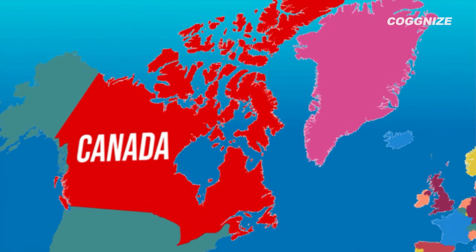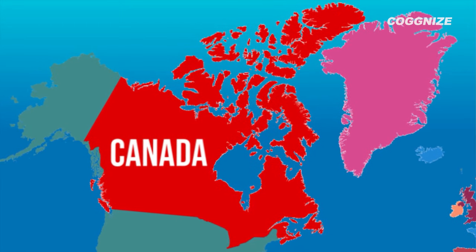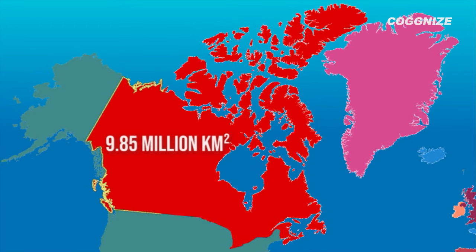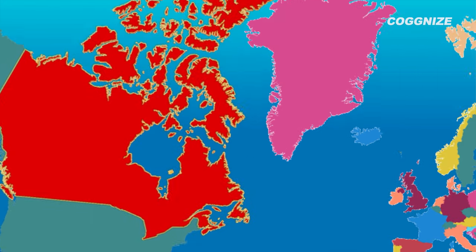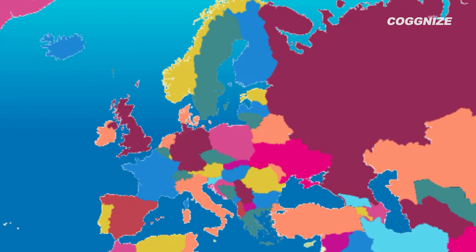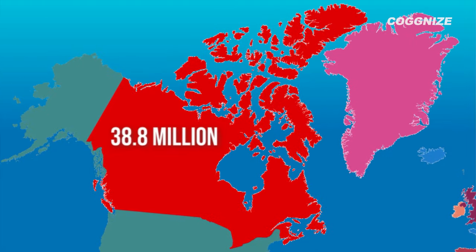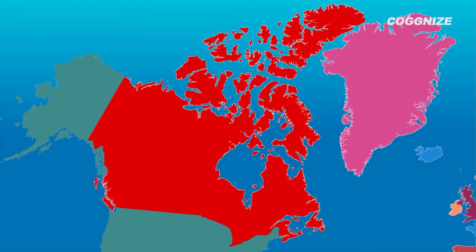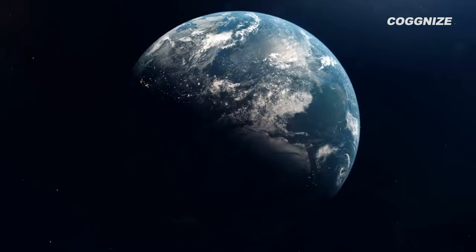Canada is the world's second-largest country by land area, but it has a relatively small population. With a land area of 9.85 million square kilometres, Canada is almost as large as the entire continent of Europe. However, Canada's population is just 38.8 million, which accounts for only 0.5% of the world's population. This means that Canada has a population density of just 4 people per square kilometre, which is one of the lowest in the world.